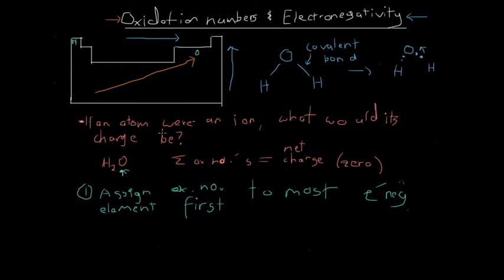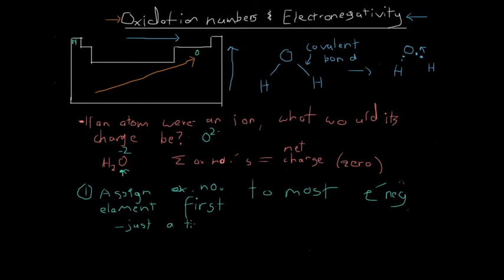So we assign the oxidation number to oxygen first. The question is: if an atom were an ion, what would its charge be? Well, oxygen forms an oxide ion, which is O²⁻, so the oxidation number is minus 2. You may notice that I've written the sign then the number, rather than the number then the sign as we do for ionic charge. We do that to eliminate confusion, so we don't get confused between an oxidation number - which is just a tool - and the actual charge on an ion, which is a really significant property.